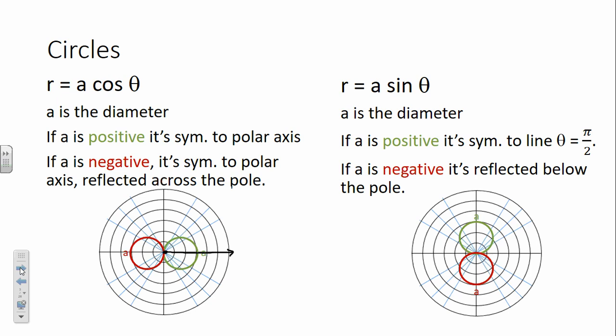On R equals A sine theta, A is still the diameter, but when A is positive it's symmetric to the line theta equals pi over 2. If it's negative, it's reflected below the pole. So negatives reflect to the left of the pole if you're cosine, and below the pole if you're sine. R sine theta is vertical, and R cosine theta is the horizontal stuff.